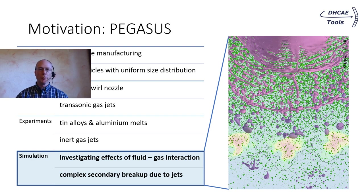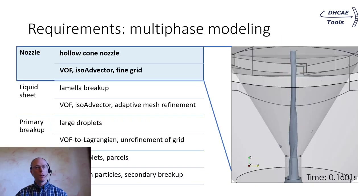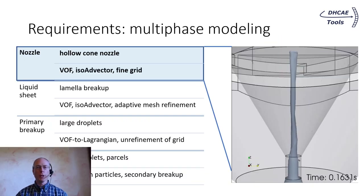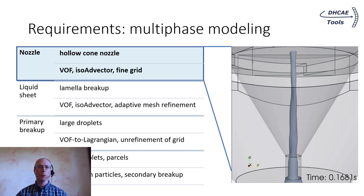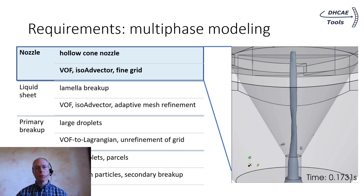One of the main benefits from the VoF-to-Lagrangian cloud function objects is the ability to simulate these essential aspects of the project. I want to point out briefly which are the main models from OpenFOAM's multi-phase libraries which are used in the PEGASOS project.